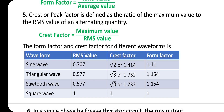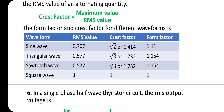The form factor and crest factor for different waveforms — memorize these values. For sine wave: RMS = 0.707, crest factor = √2 (1.414), form factor = 1.11. For triangular and sawtooth wave: RMS = 0.577, crest factor = √3 (1.732), form factor = 1.154. For square wave: RMS, crest factor, and form factor are all 1.